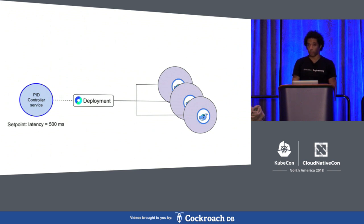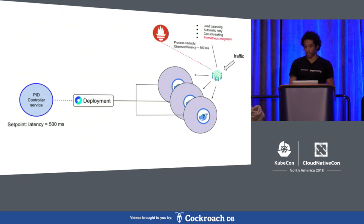So we expect the request to be serviced in 500 milliseconds. That gives us our set point. Now we need the process variable so we can observe what's happening. And for that, we would use Linkerd. It's a great piece of software that has a lot of benefits, including automatic load balancing across all of its replicas, automatic retries, circuit breaking.